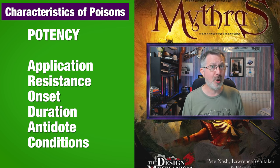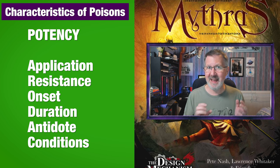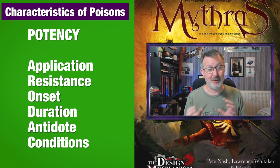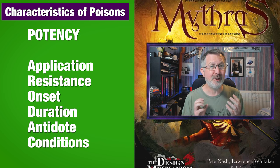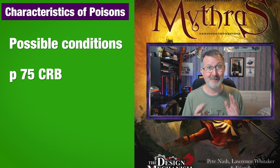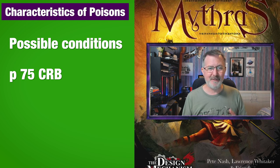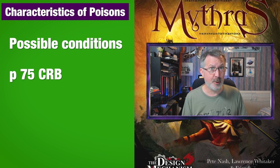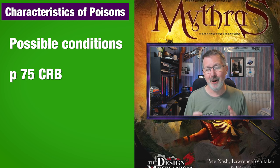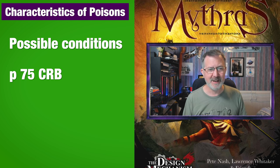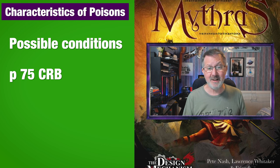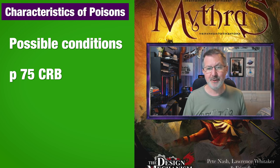Duration is how long the poison will last once it has started to take effect. There is also whether there is an antidote or a cure, and finally what conditions the poison or disease causes. You don't have to think about all of these yourself — there is a complete list of all possible conditions on page 75 of the core rulebook. These range from bleeding and confusion to unconsciousness and hallucinations.